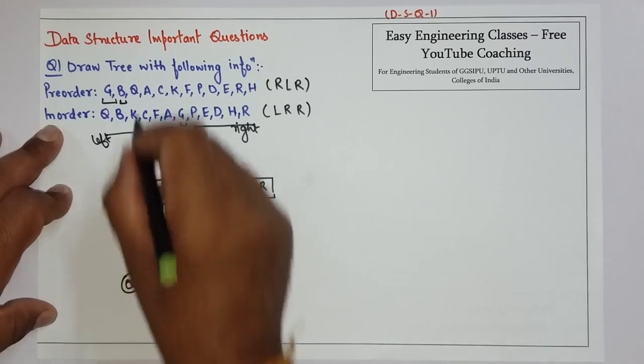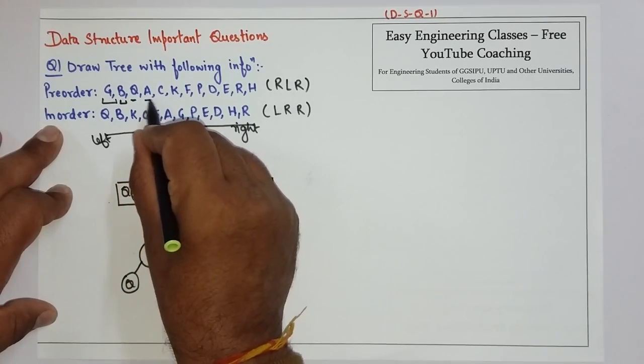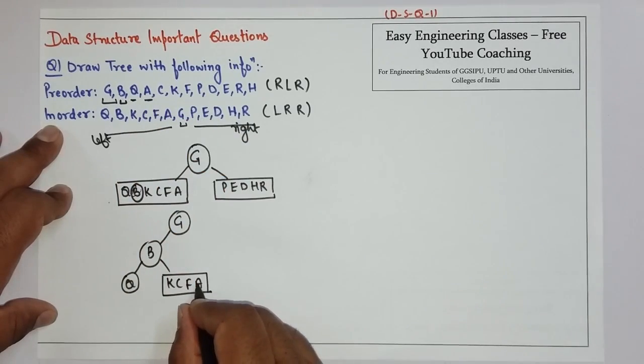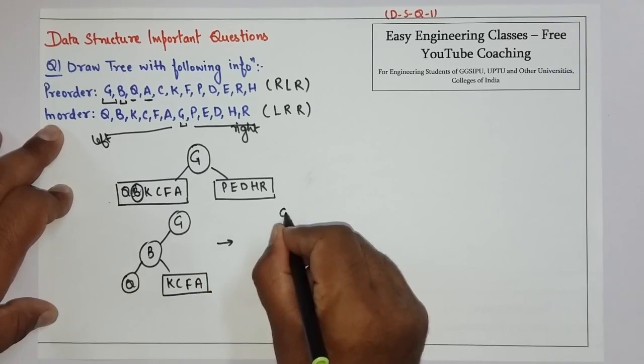Now again, Q is the root but there are no subtrees for Q, so we end here. Then A is the root, and all the elements are on the left. So this will become like this.